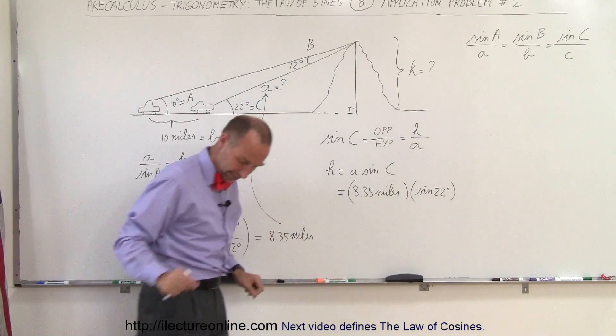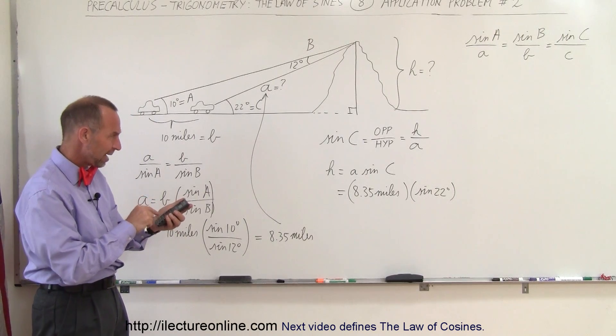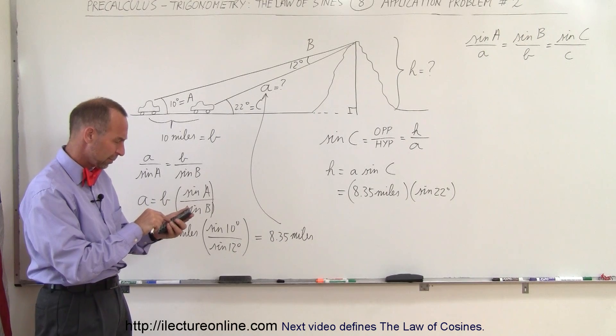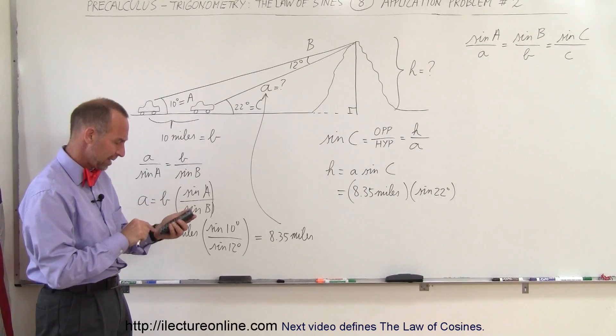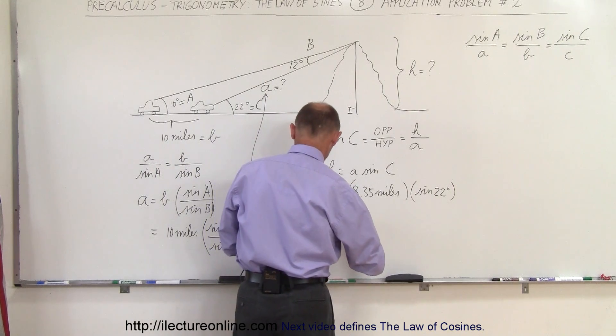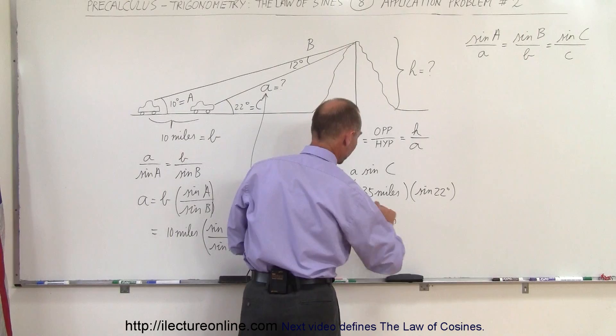Let's see what that equals. 8.35 times sine of 22 equals... we get H equals 3.13 miles. Wow, that's a very tall mountain.